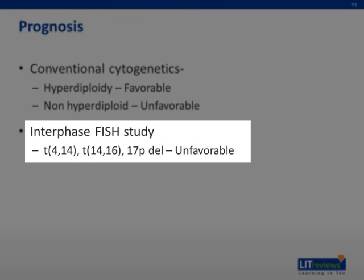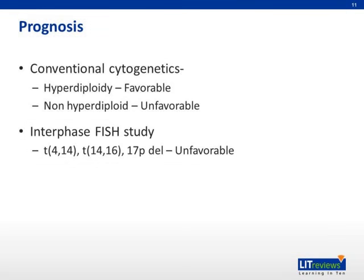By interphase FISH study, presence of translocation t(4;14), translocation t(14;16), or 17p deletion are unfavorable. Although prognosis is affected significantly by karyotype and FISH results, treatments at present are not risk-adapted. There is an increasing body of evidence suggesting benefits of potent novel agents like proteasome inhibitors and immunomodulatory agents in selected high-risk patients. However, more studies are required.